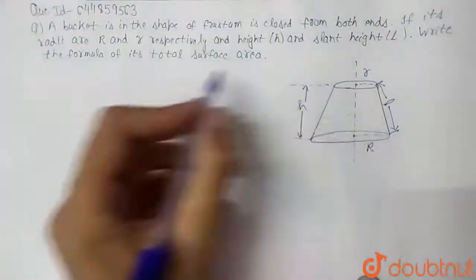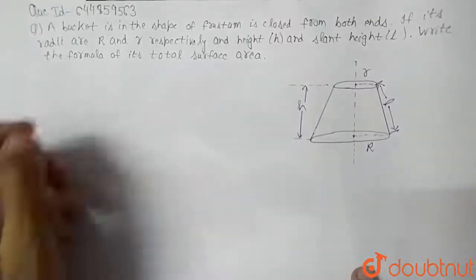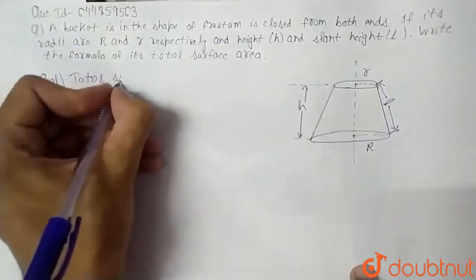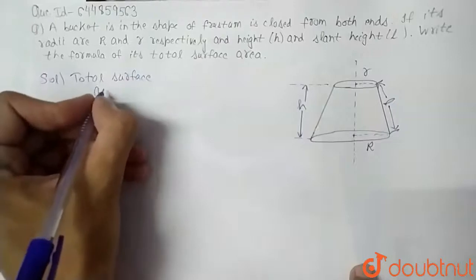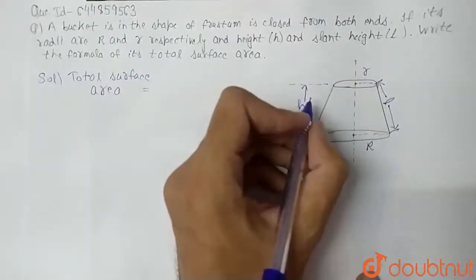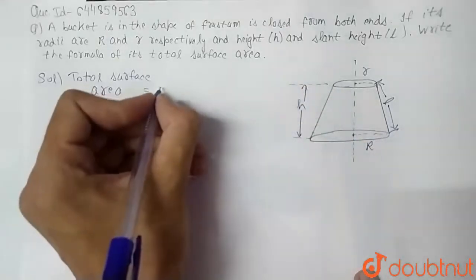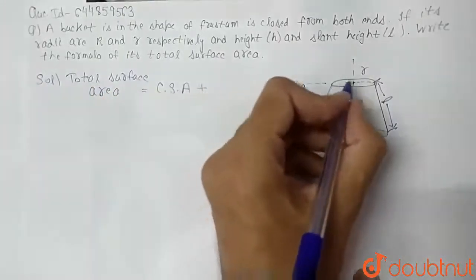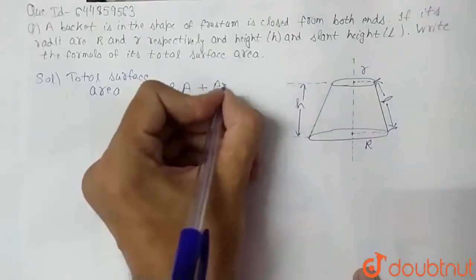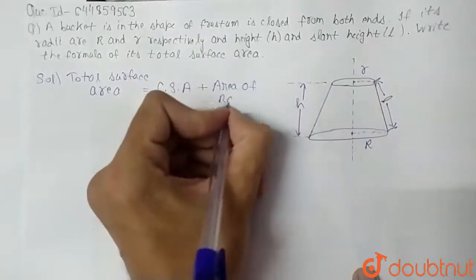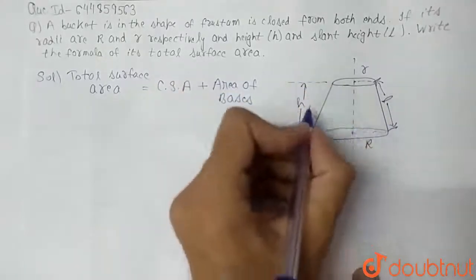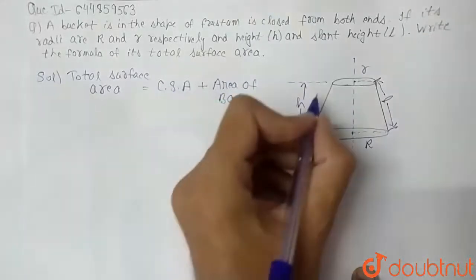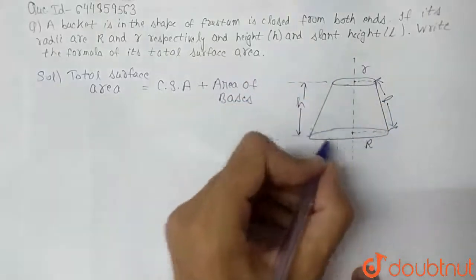Now we have to find the formula for total surface area. The total surface area is equal to the curved surface area of the frustum plus the area of both the bases. So total surface area is the sum of curved surface area plus area of both the circular bases.